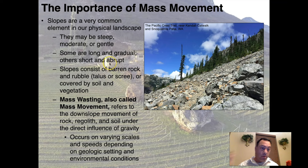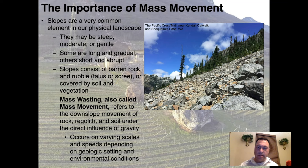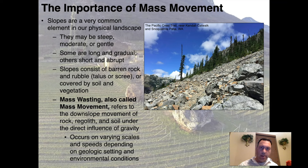Or a slope can be short and abrupt, like going off a cliff. Slopes consist of barren rock and rubble — we call those talus or scree depending on the size and context — or they can be covered by soil and vegetation. I have a great slide here that I found online, a photograph taken by hikers on the Pacific Crest Trail in Washington.